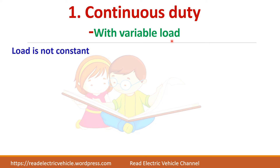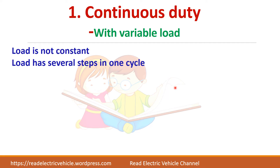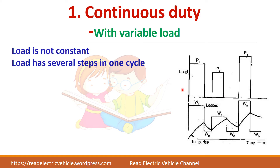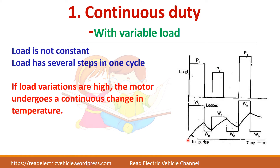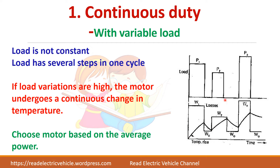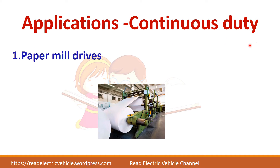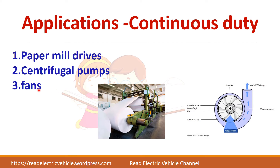Next is continuous duty with variable load. Here, the load is not constant but it varies in steps. For example, like a juice maker — you add some fruits, then after some time you add more. So your load is variable but the machine is on continuously. The temperature will rise for some time, then decrease, then rise again. In this case, choosing a motor is difficult because we don't know the particular load value, so we have to choose the motor based on the average power. Applications of continuous duty include paper mill drives, centrifugal pumps, and fans.